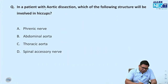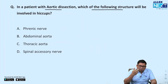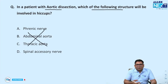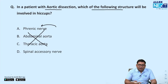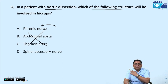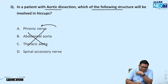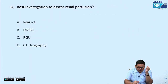A patient with aortic dissection develops hiccups. This is due to irritation of the phrenic nerve. The spinal accessory nerve supplies the trapezius, causing pain radiating to the scapula or tip of the shoulder — that is different. For hiccups, it is the phrenic nerve.